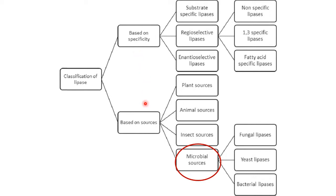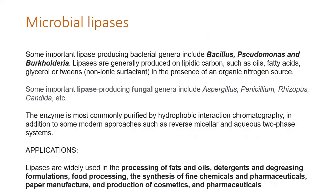We are interested in the microbial source, which can be fungal, yeast, or bacterial lipase. Some important lipase-producing bacterial genera include Bacillus, Pseudomonas, and Burkholderia. Lipases are generally produced on lipidic carbon sources such as oils, fatty acids, glycerols, or Tweens.